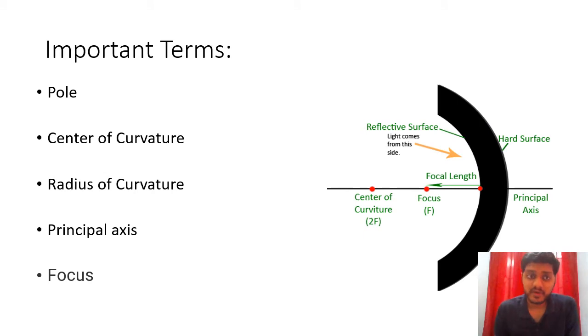Now there are some important terms such as pole. So what exactly is pole? The pole is the center most point of the spherical mirror. The center of curvature, it is the center of a sphere of which once the mirror was part of.